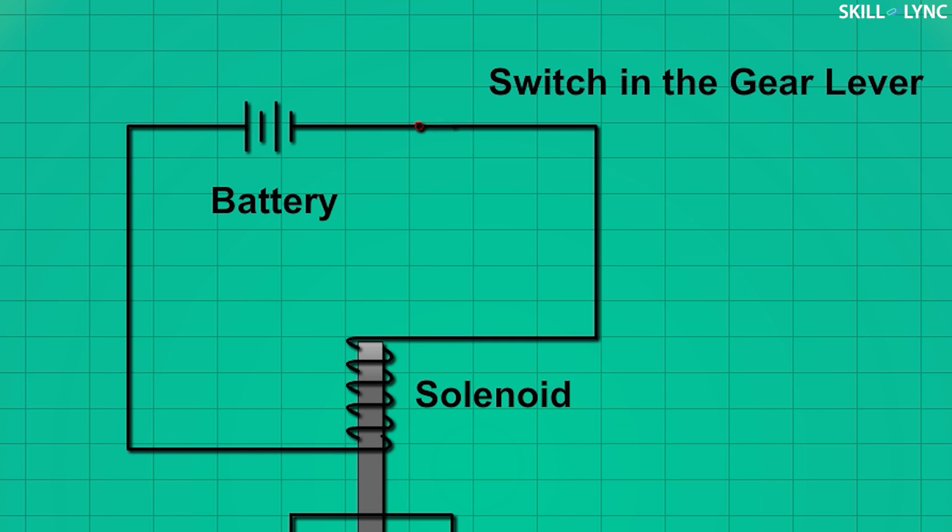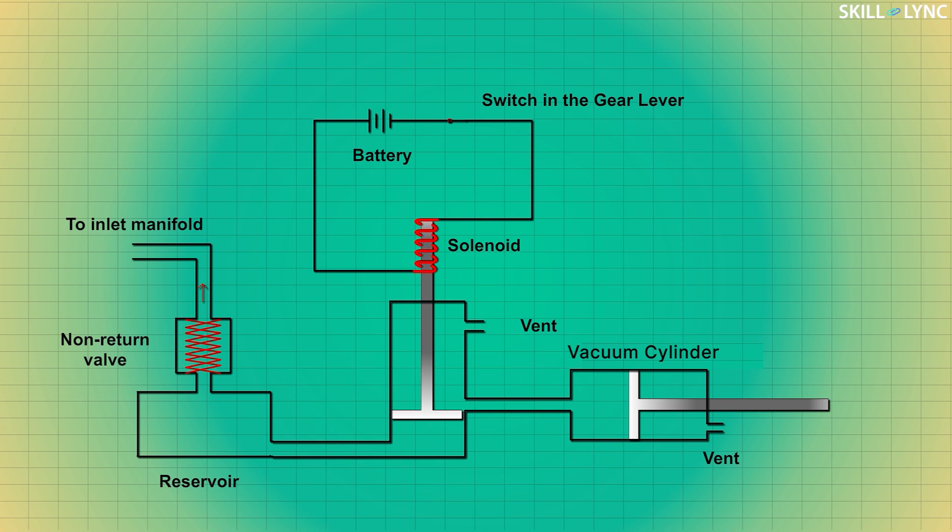Then the battery energizes the solenoid valve and the valve lifts up. This establishes the connection between the reservoir and the vacuum cylinder. Due to the pressure difference on either side of the piston, it moves resulting in the disengagement of the clutch. The clutch engages automatically when the driver leaves the gear lever.